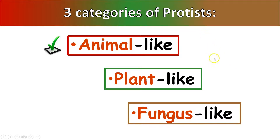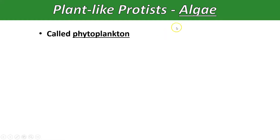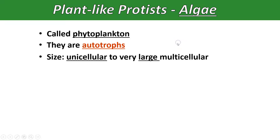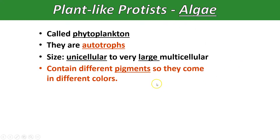The next category of protists are the plant-like protists, called algae, also known as phytoplankton - 'phyto' means plant-like and 'plankton' means floater. They are autotrophs, all able to do photosynthesis and make their own food. Size-wise, some are unicellular and some are extremely large and multicellular. Giant kelp, for example, are not a plant - they are plant-like algae. They can be 100 to almost 200 feet long and can on average grow about one foot a day, or up to two feet a day in ideal conditions. They contain different pigments so they're not all green - some come in different colors.